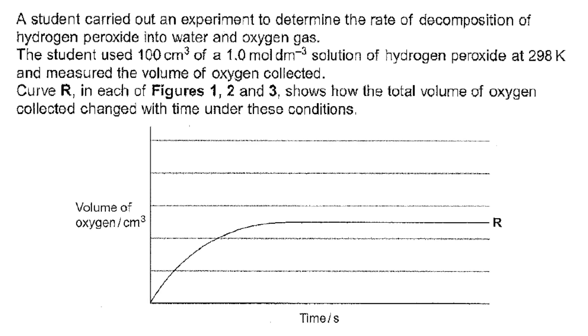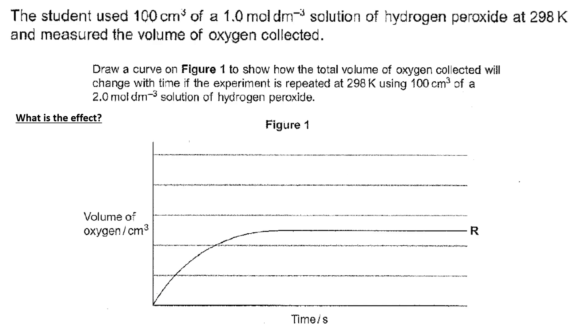It mentions curve R in each of figures 1, 2 and 3 and shows how the total volume of oxygen collected changed with time under these conditions. The first part of the question is asking you to draw a curve on figure one to show how the volume of oxygen collected will change with time if the experiment is repeated at 298K using 100 cm³ of a 2 mol dm⁻³ solution.